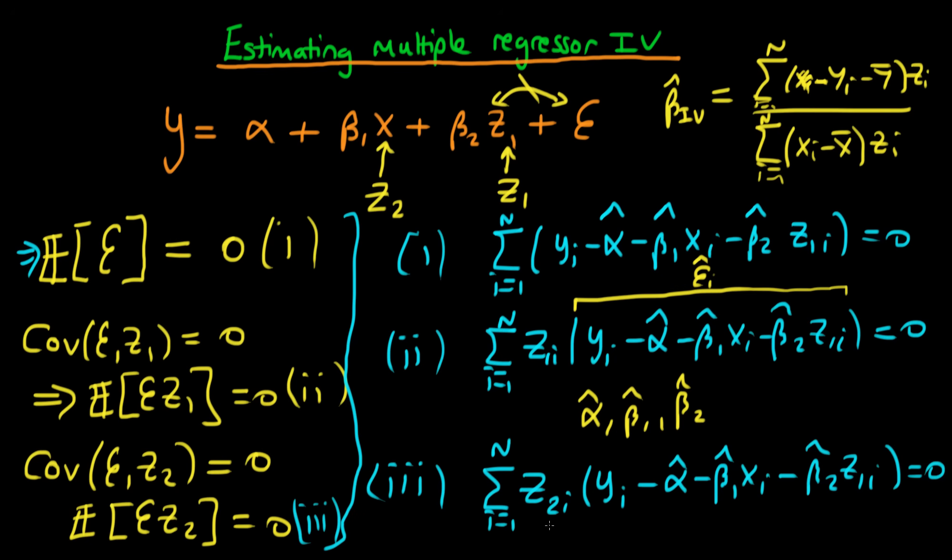And note that if it was the case that z2 essentially wasn't correlated with x, then we can think about this as removing this term here in this third expression. And if we do that we actually have a problem because there will turn out to be many different ways in which we can actually estimate the parameter beta1. So we've actually got some serious issues with using IV estimators.